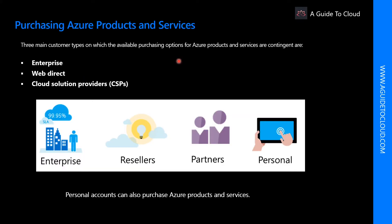There are three main customer types: enterprise, web direct, and cloud solution providers. Enterprise customers sign an enterprise agreement with Azure that commits them to spending a negotiated amount on Azure services, which they typically pay annually. Enterprise customers also have access to customized Azure pricing.